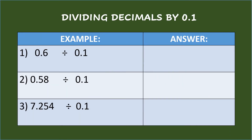Dividing decimals by one-tenth. First example: six-tenths divided by one-tenth. Since the divisor has only one decimal place, move the decimal point of the dividend one place to the right and put the decimal point afterwards. So the answer is six.